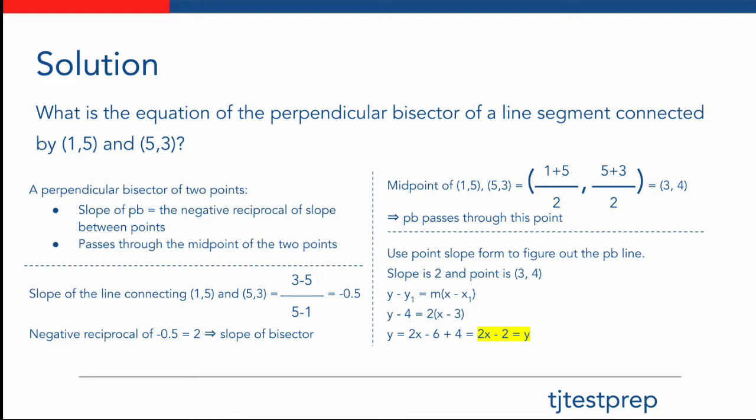To find the midpoint of (1, 5) and (5, 3), we simply take the average values of the x and y coordinates. So we get (1 plus 5) over 2 and (5 plus 3) over 2, which gives us the midpoint (3, 4). We now know that the perpendicular bisector passes through the point (3, 4).